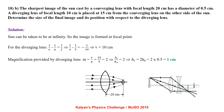The sharpest image of the sun cast by a converging lens of focal length 20 cm has a diameter of 0.5 cm. A diverging lens of focal length 10 cm is placed 15 cm from the converging lens on the other side. The sun is at infinity so the image of the converging lens forms at its focal point. For the diverging lens, 1 by v minus 1 by u equals 1 by f gives 1 by v minus 1 by 5 equals minus 1 by 10, so v equals 10 cm. Magnification equals 10 by 5 equals 2, so the final image height is 1 cm.